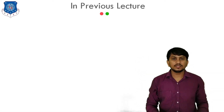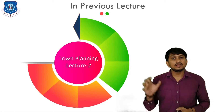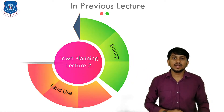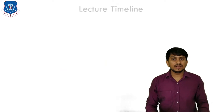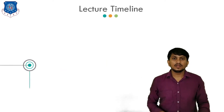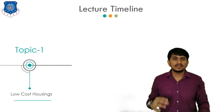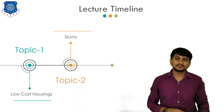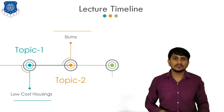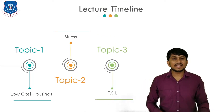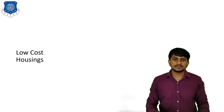In the previous lecture, lecture number two, we covered two topics: Land Use and Zoning. In today's lecture, we will cover first, low-cost housing; second, slums; and third, what is FSI. Let us begin with low-cost housing.